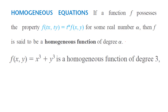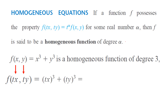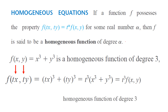Consider f of x and y equals x cubed plus y cubed. We claim this is a homogeneous function of degree three. Substituting tx for x and ty for y gives tx cubed plus ty cubed. Factoring out t to the third yields t cubed times x cubed plus y cubed, which is t cubed times f of x and y — confirming it is homogeneous of degree three.